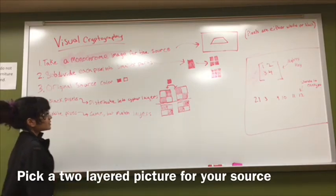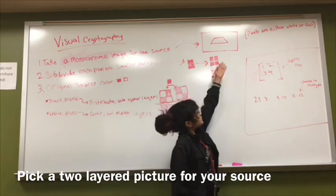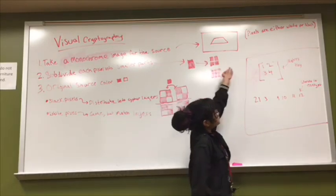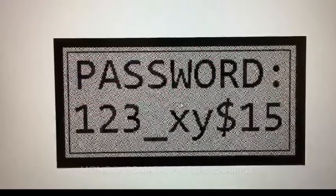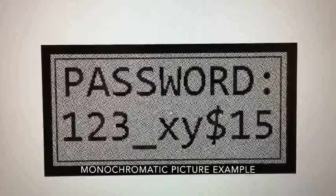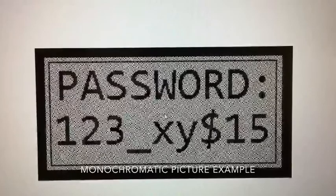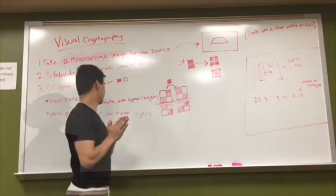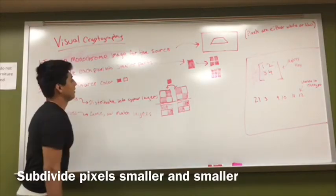We take a monochromatic image for the source, such as this, and that means that pixels are either black or white.